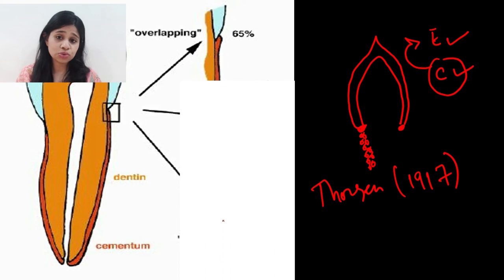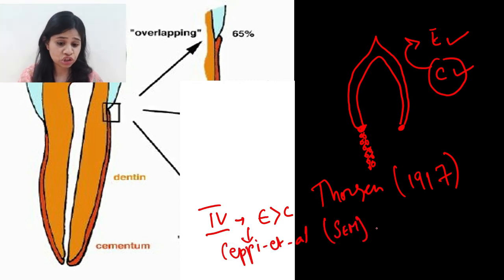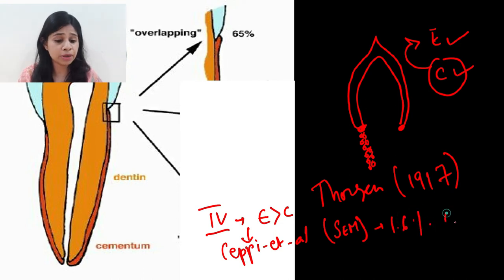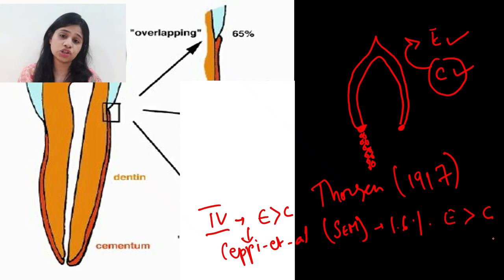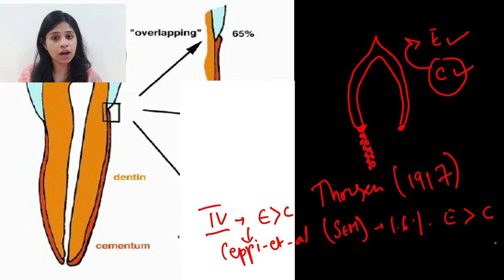There is a fourth type of pattern where enamel overlaps cementum. Studies by Kepi et al. found that in primary dentition and in approximately 1.6 percent of conditions, enamel overlaps cementum. This is a controversial topic because embryonically this condition should not occur, but in certain conditions it can, and these will be discussed in the later part of the video.